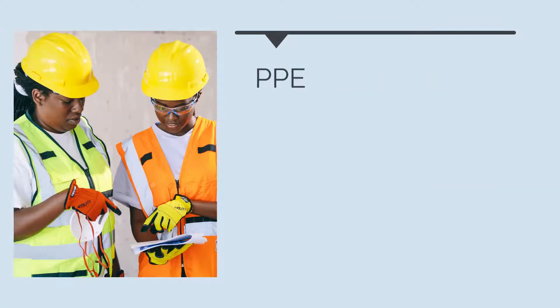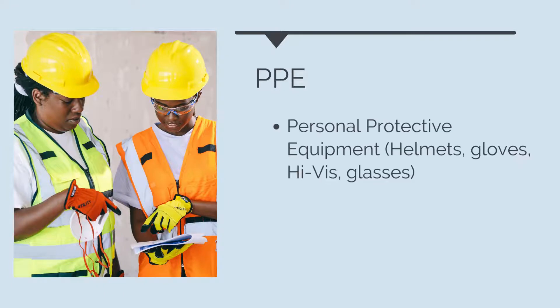The lowest level of protection is the use of personal protective equipment, or PPE. This includes helmets, gloves, high-vis, and glasses. PPE is the last line of defense and by far the least effective form of protection. As an example, if we are performing work at heights and trying to manage the hazard of dropped objects, a PPE solution would require workers to wear helmets. If an object falls, it will still hit a worker — they will just be wearing a helmet when it does.